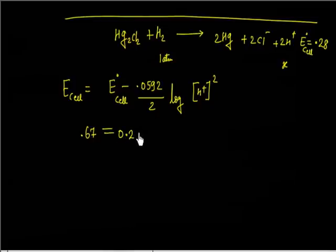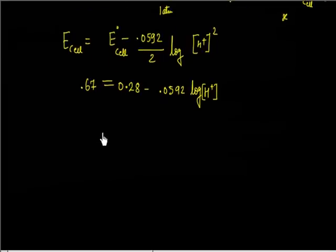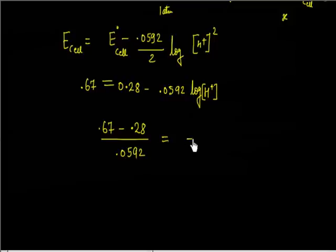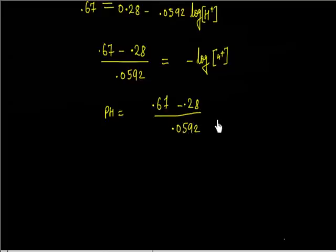So: 0.28 − (0.0592) × log[H⁺] = 0.67. Since pH = −log[H⁺], things are very easy. pH = (0.67 − 0.28) / 0.0592. We can calculate this value.